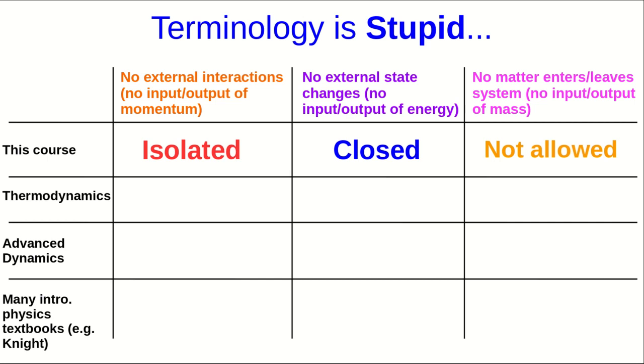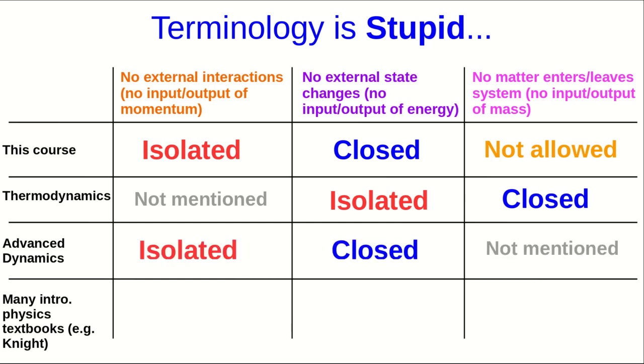If you go on and do thermodynamics, you'll find that people use the terminology differently. Input or output of momentum just isn't really an issue in thermodynamics, and so it just doesn't get mentioned, but they use isolated to mean no input or output of energy, and closed to mean no input or output of mass. And in advanced dynamics, they tend to use the terminology we do, though they're usually not clear about saying that they're never allowing matter to enter or leave a system.